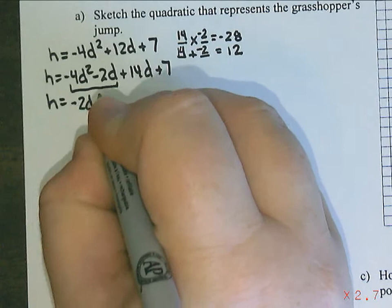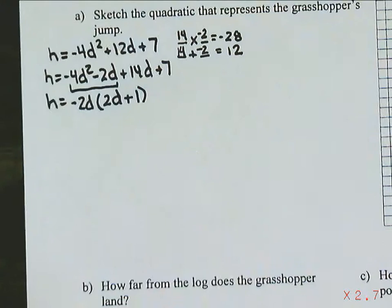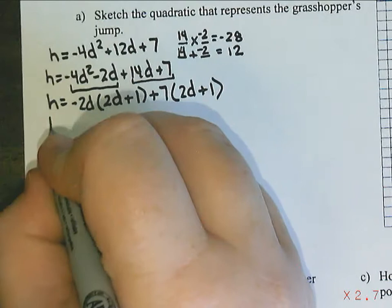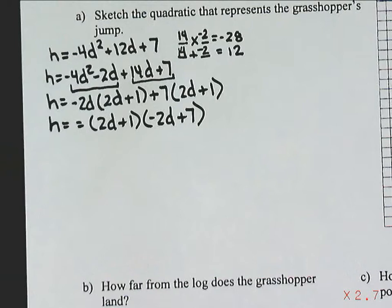Out of the first pair, I can take out a negative 2 and a d, and we're going to be left with 2d plus 1. And then out of the second one, that's just going to be 1. From the second pair, I can take out a 7, and I'm also going to be left with 2d plus 1. So in factored form, we have 2d plus 1, and negative 2d plus 7.